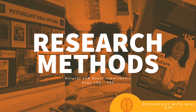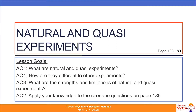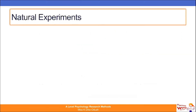Hi Year 12, I hope that you are doing well. Today's lesson is going to focus on natural and quasi experiments. In terms of our lesson goals, we want to cover our AO1 knowledge for what are natural and quasi experiments, how they are different to other experiments such as lab and field experiments, and for our evaluation we want to be able to outline the strengths and the limitations of natural and quasi experiments. Finally, to apply our knowledge, we're going to have a look at some of the scenario questions on page 189.